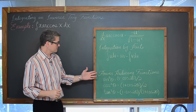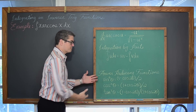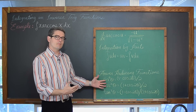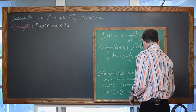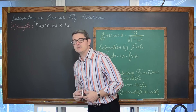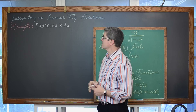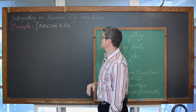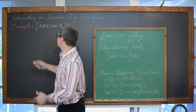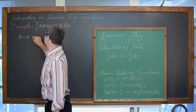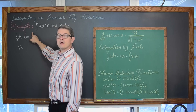Somewhere along this problem we are going to require one of these power-reducing formulas. We are not sure if your teachers require you to memorize these or will give them as a reference, but we are going to have them here as we go through our problem. We have the indefinite integral of x arc cosine of x dx. Since we have never integrated an inverse trig function before, this is not going to be our dv. So we are going to let dv be x dx.